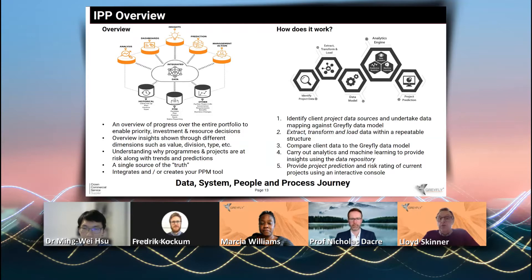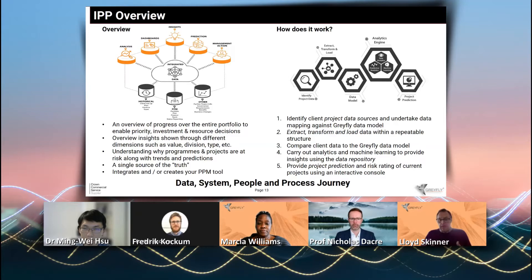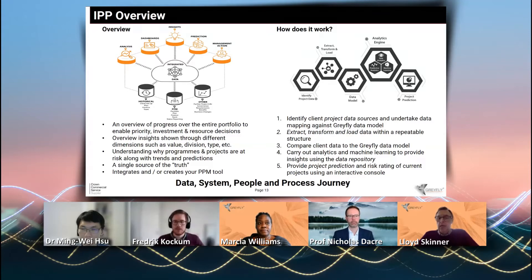It then comes into a proprietary data model, and that's where the cleverer stuff comes in. There are two types of analysis we do around predicting a project outcome. The first is around data analytics - we're actually using Microsoft Power BI, which allows you to interpret and present the data, and we've written some algorithms that allow you to apply that to the project. The other piece, which I'll let Ming pick up on later, is about machine learning - the machine learning from the data within the system. Collectively, both the data analytics and the machine learning are combined to predict an outcome of the project.